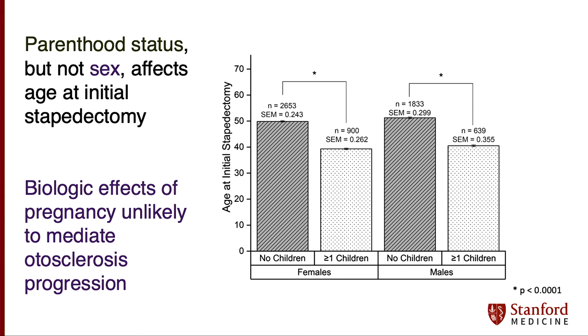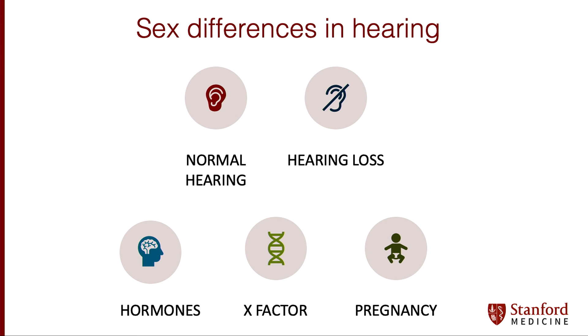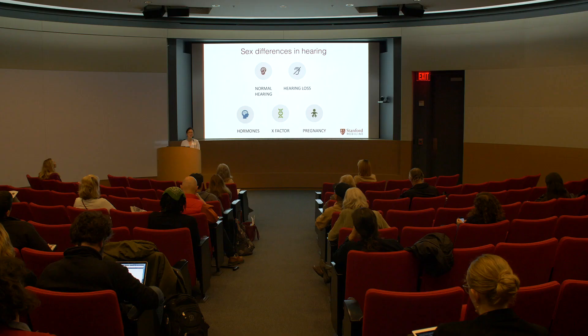Overall, there are definite sex differences in hearing in both normal hearing and hearing loss cases. We don't really know why, but they are consistently demonstrated. There is probably some role of hormones, some role of other factors on the X chromosome, and perhaps some role of pregnancy — but certainly not in the case of otosclerosis. More investigation would help, and I would be happy to collaborate with anyone interested in these topics. I'd be interested to hear your thoughts as well. Thank you.